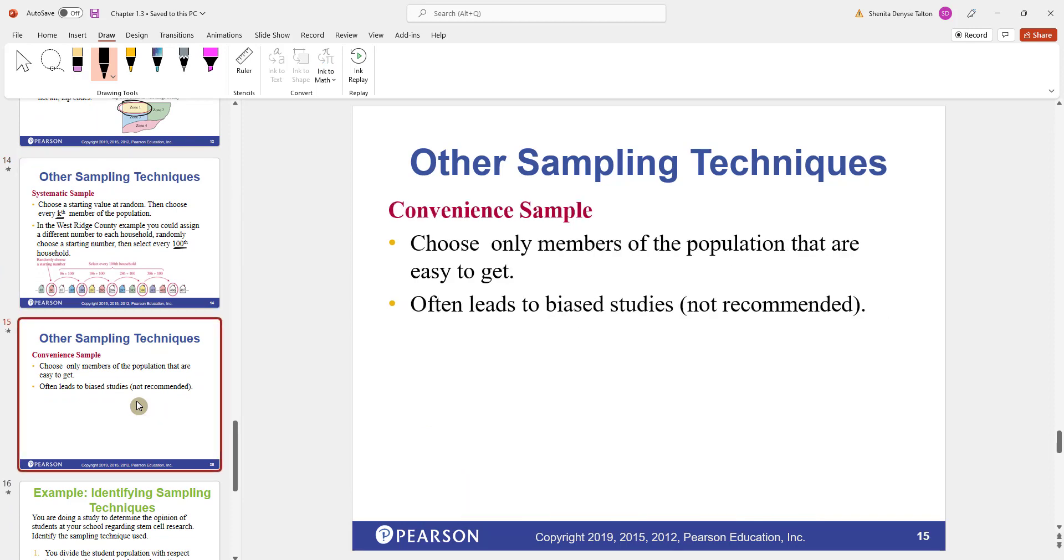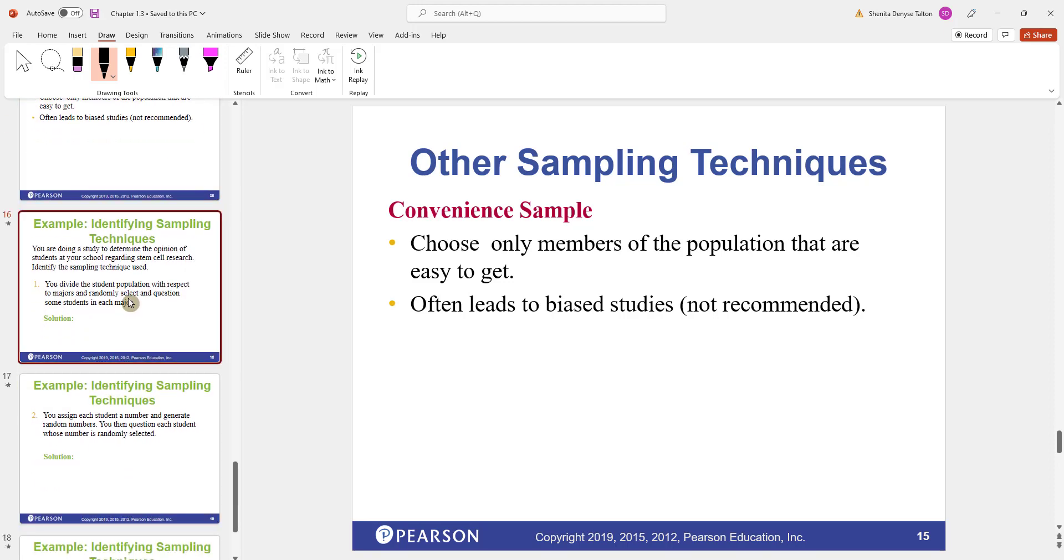Convenience sampling, you only choose members in the population that are easy to get. And this often leads to biased studies and is highly not recommended. For example, if you wanted to do a survey on something and you just picked everybody that you live with. That's kind of biased. It's just something, you got people who are readily available and you just go ahead and pick them.